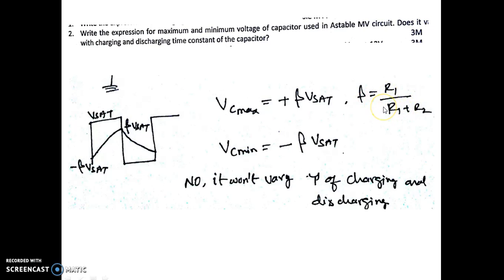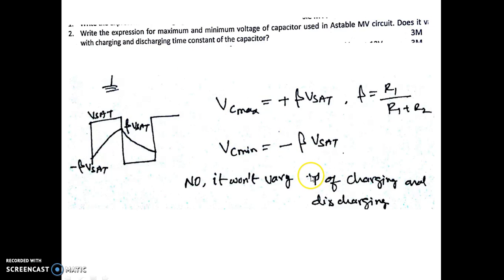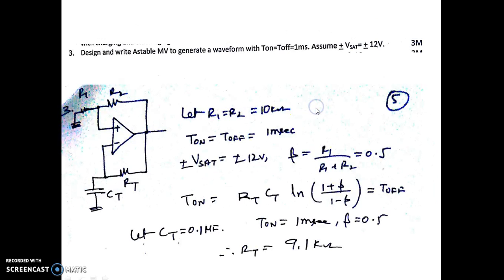Here R1 and R2 are as per the normal circuit connections. The question also asked: does it vary with the charging and discharging time constant? No — Vc_max and Vc_min will not vary with the time constant tau (R*C). Vc_max and Vc_min will only depend on the value of beta and the saturation voltages.